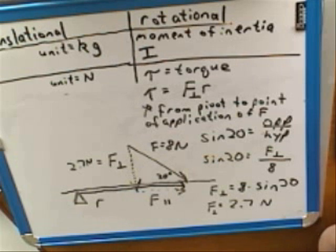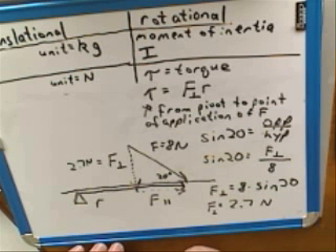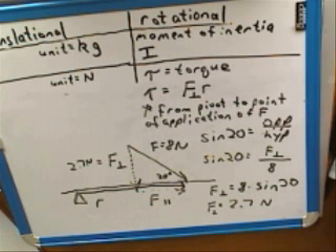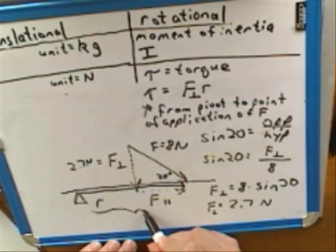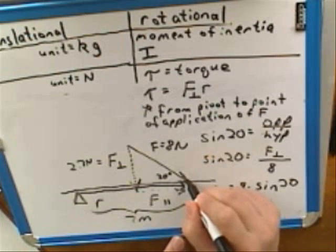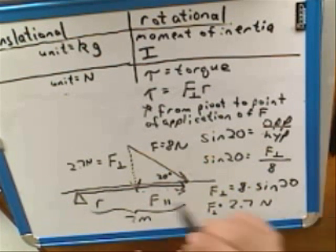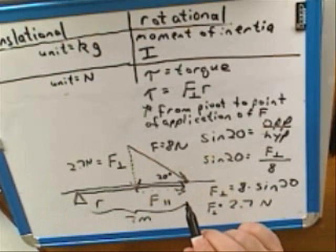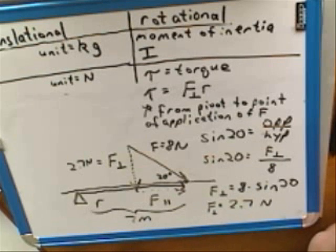So that gives us our F perpendicular side. Now I didn't tell you what the distance was, but let's say that it's 7 meters — 7 meters from the pivot to the point where the force is being applied. This other point over here doesn't have significance; we don't care about that distance, that's just an artifact of the triangle we drew. What we care about is the distance between the pivot and where the force is actually being applied, and that's our 7 meters.